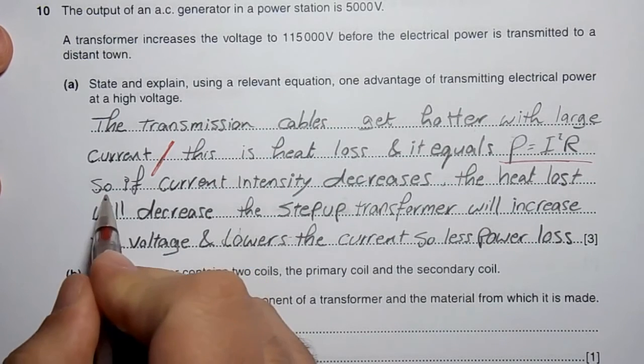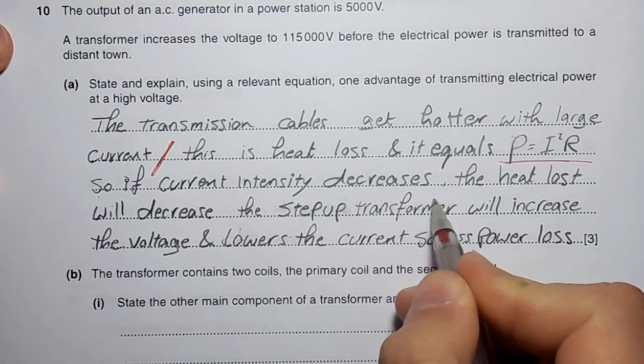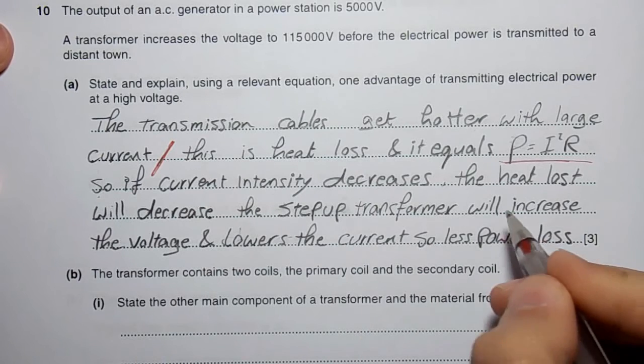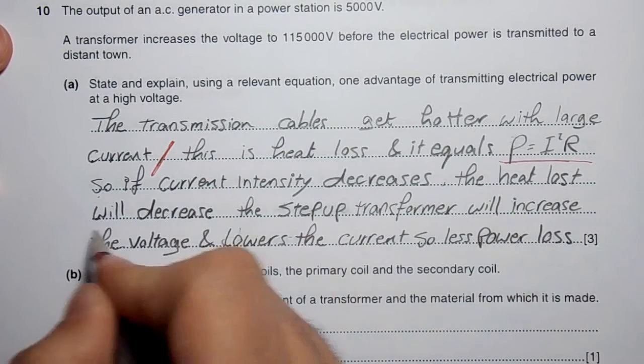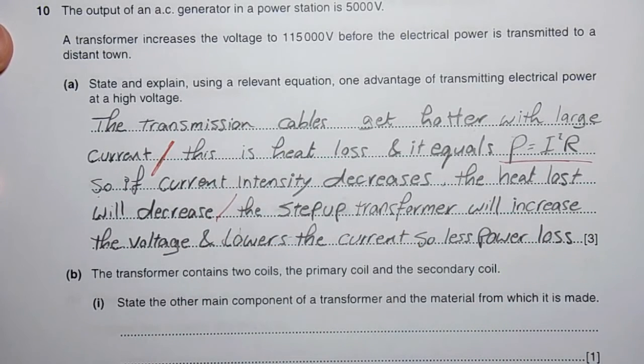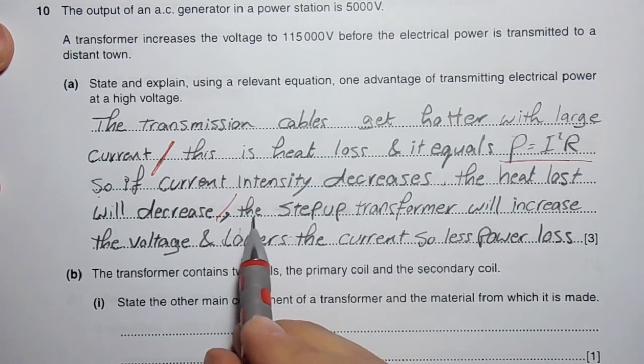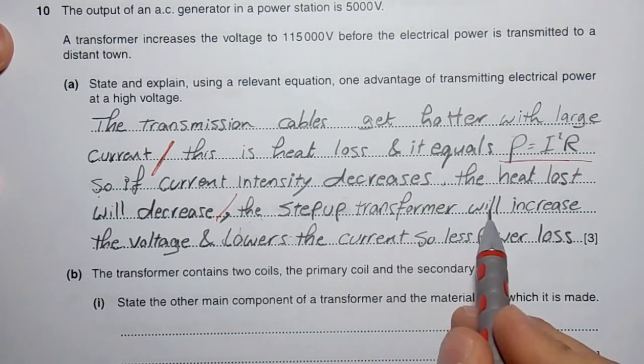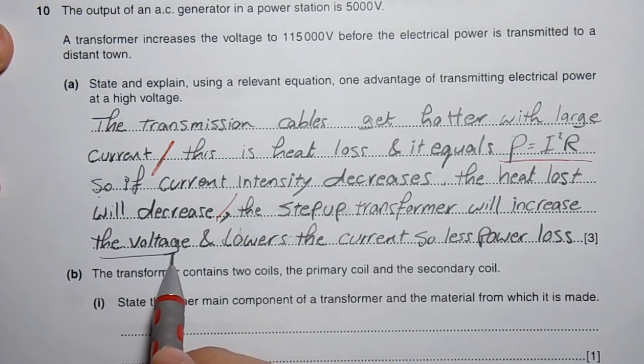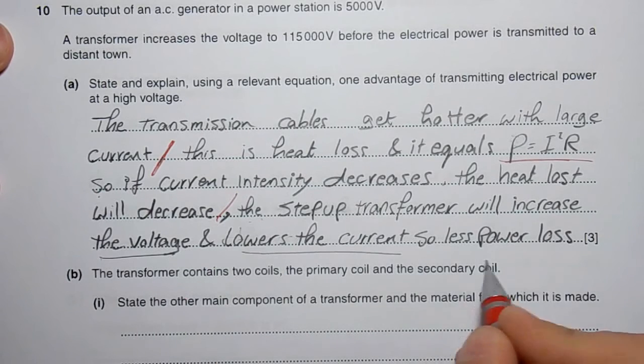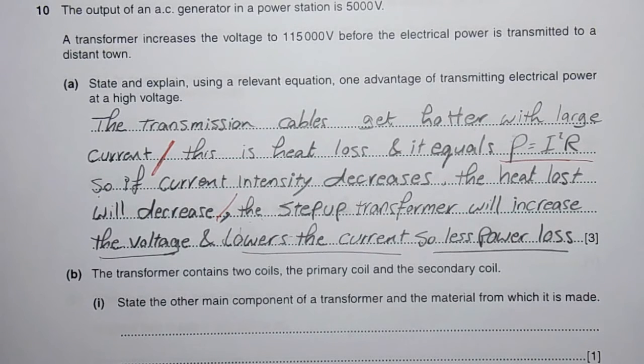So if current intensity decreases, the heat loss will decrease. The step-up transformer will increase the voltage and lower the current, so less power loss.